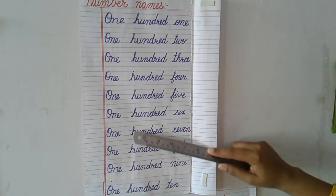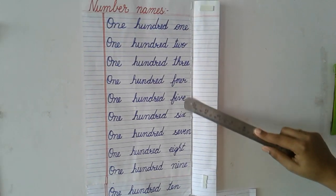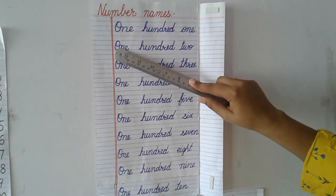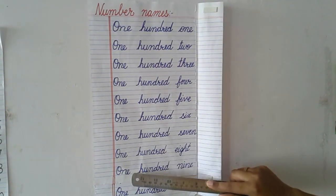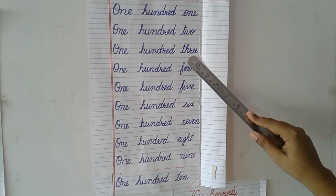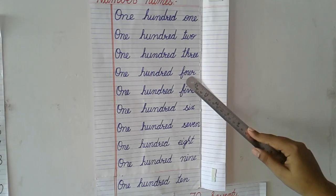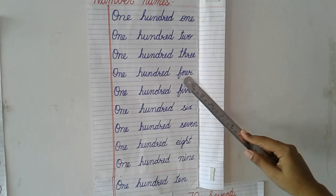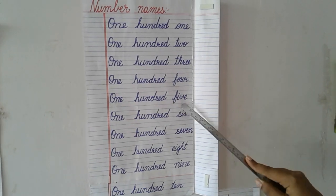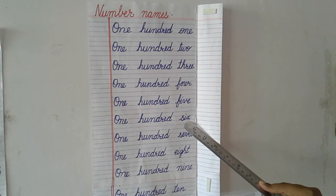103 — THREE. 104 — FOUR. 105 — FIVE. 106 — SIX.